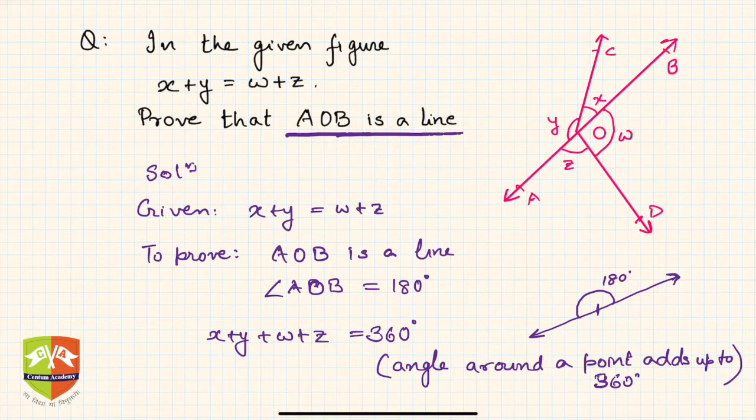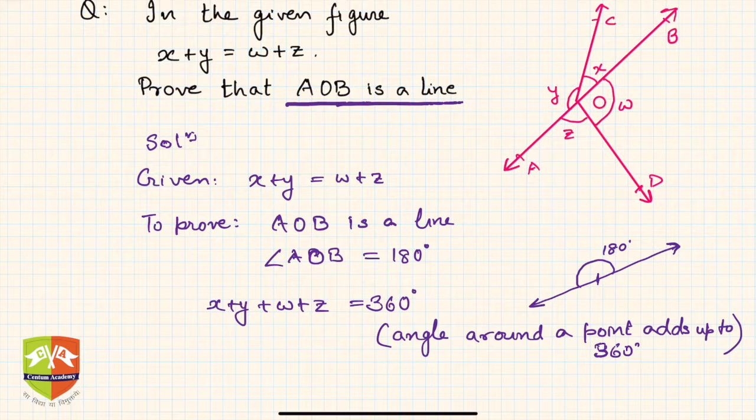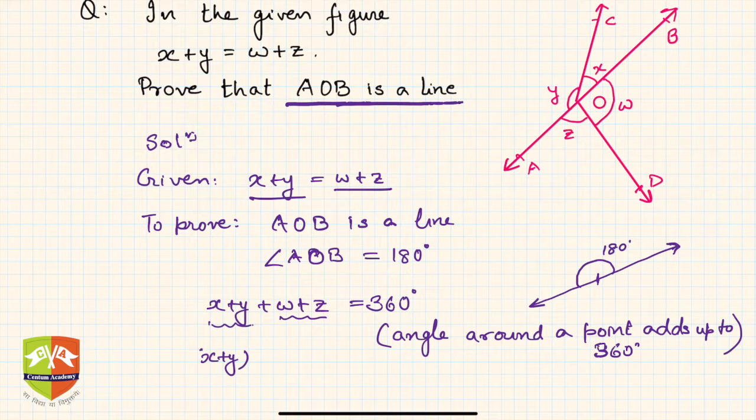This is our knowledge. Now, x plus y was equal to w plus z. So from here, I can write this as x plus y, and instead of w plus z, I can again write x plus y because x plus y was equal to w plus z.